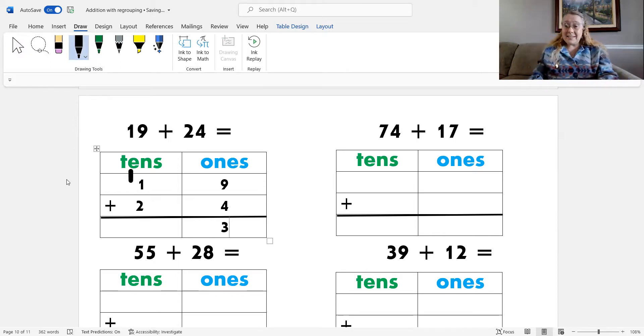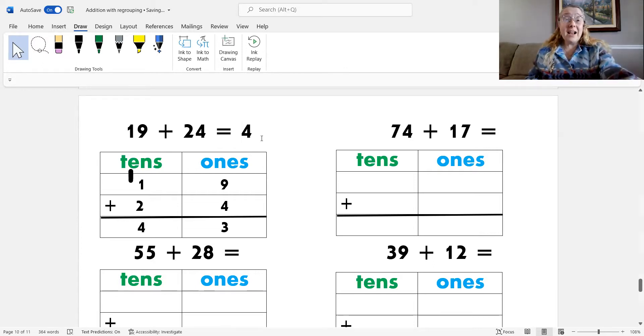What's my last step? Yeah, add the tens. Okay, so 1 plus 1 is 2, plus 2 is 4. That's right. So, I know that 19 plus 24 equals 43. Cool. Okay, let's try another one.